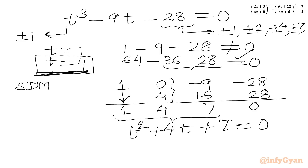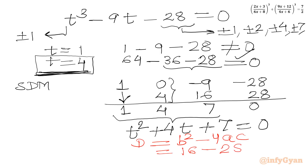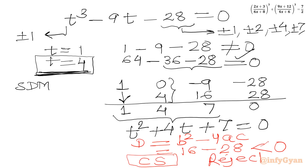I will check the discriminant: B² − 4AC = 4² − 4(1)(7) = 16 − 28 = −12. The discriminant is negative, so we get complex solutions. We can reject this quadratic for our real solutions. Therefore T = 4 is the only accepted solution.